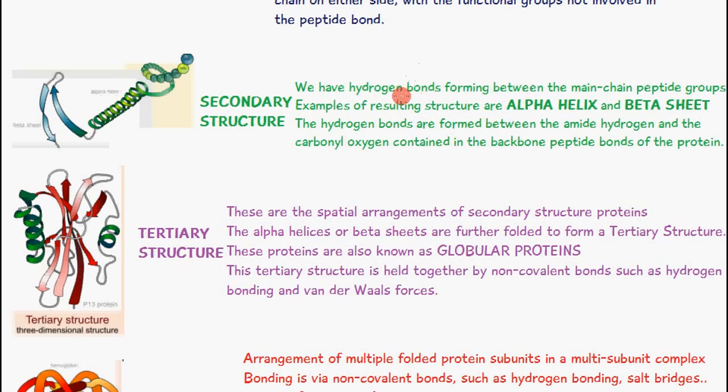We have hydrogen bonds forming between the main peptide main chain peptide groups. Examples of secondary structure proteins are the alpha helix and beta sheet. You can see here we have the alpha helix and here are the beta sheets. We have hydrogen bonds which are formed between the amide hydrogen and the carbonyl oxygen which is in the backbone of the polypeptide chain.